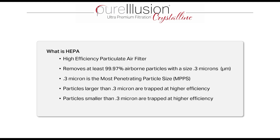0.3 microns is the most penetrating particle size, meaning the size of particle most able to penetrate a HEPA filter. Particles larger than 0.3 microns are trapped at an even higher efficiency rate, and particles smaller than 0.3 microns are also trapped at a higher efficiency rate. So 0.3 microns is the particle size most able to make it through a HEPA filter.